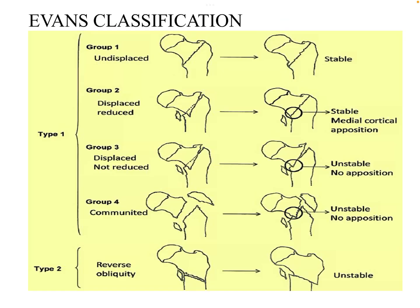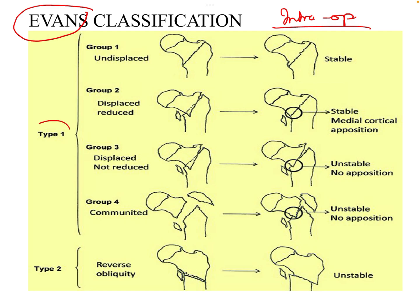Another commonly used classification is the Evans classification, which is an intraoperative classification — not a preoperative one. After putting the patient on the fracture table, we check whether the fracture is reduced or not. It broadly has two types: type 1 and type 2.